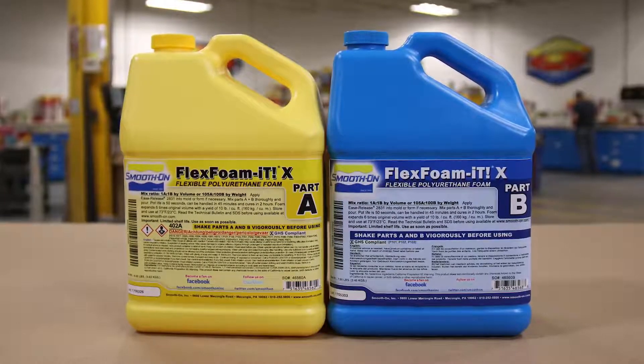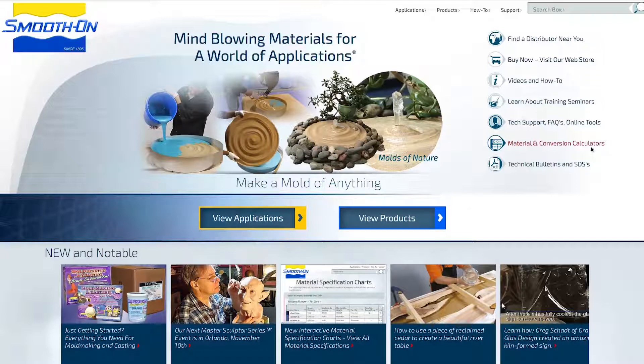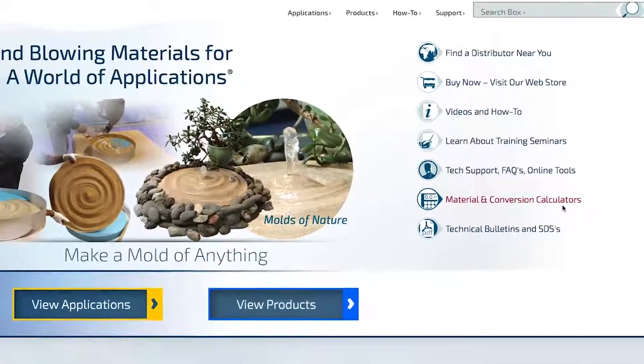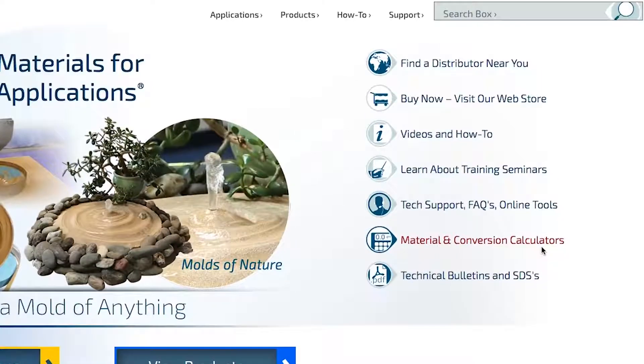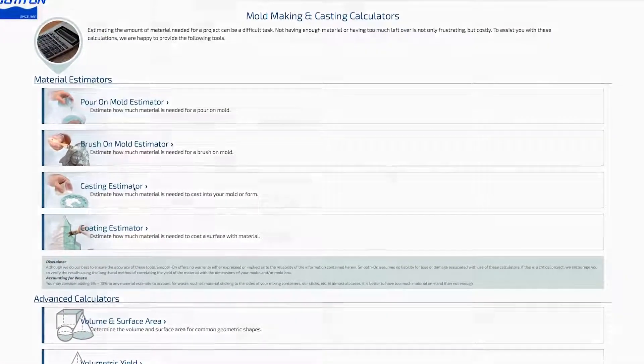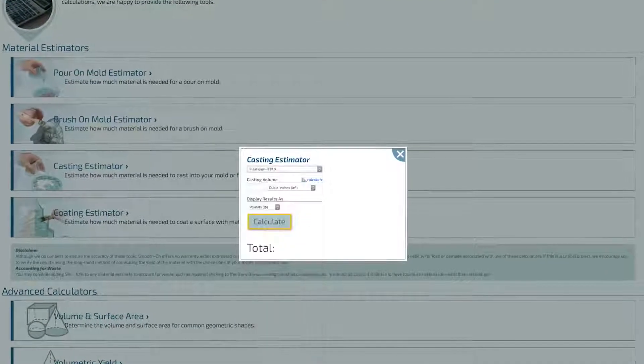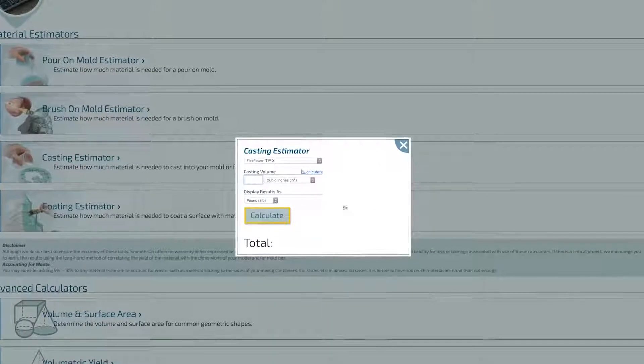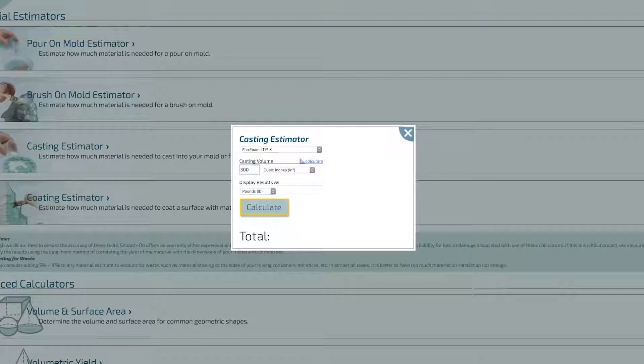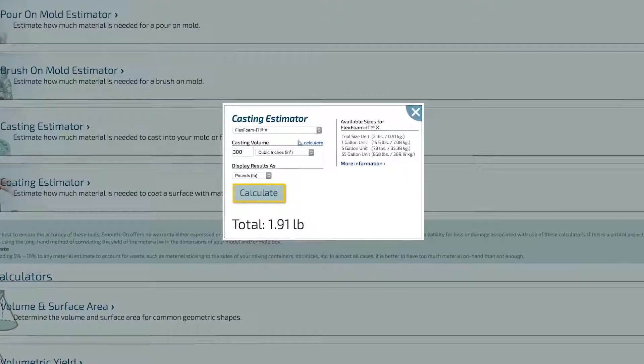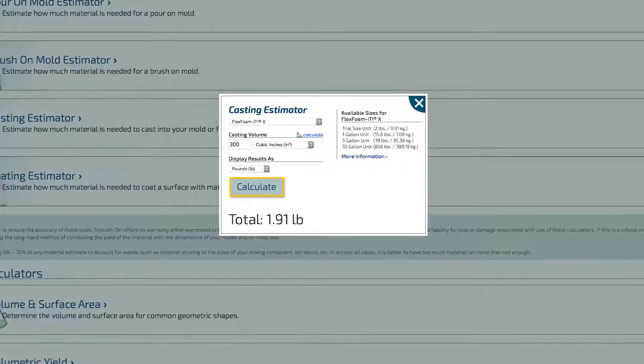This particular foam expands about six times its original volume. If you ever wonder how much material a mold box like this is going to take, there's actually a really easy way to find out. You don't have to just guess and pour. There is a material conversion calculator on our website that's going to help you determine how much product is needed to fill up a specific void. If you haven't used that tool yet, I recommend checking it out. You can do all kinds of casting, brush on, all kinds of different applications, and all kinds of different materials that we have are available in that chart to help you determine how much material you're going to need for a specific project.